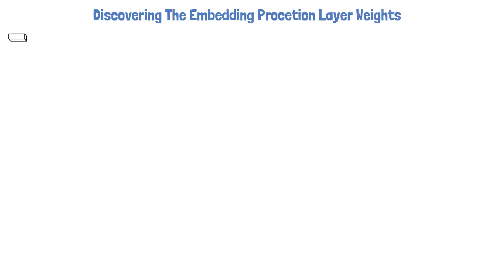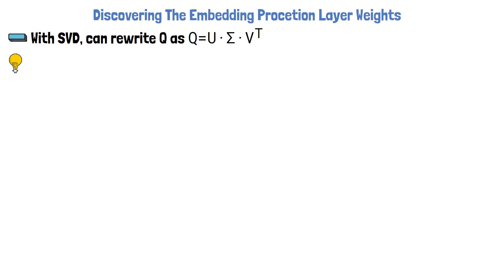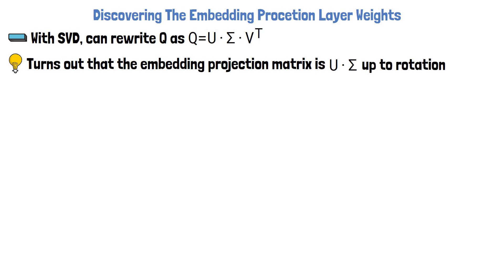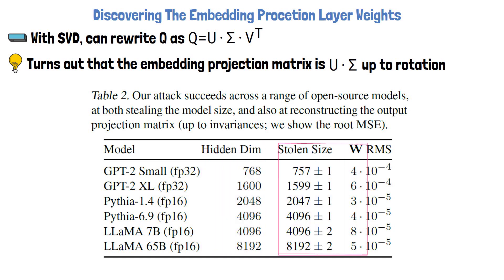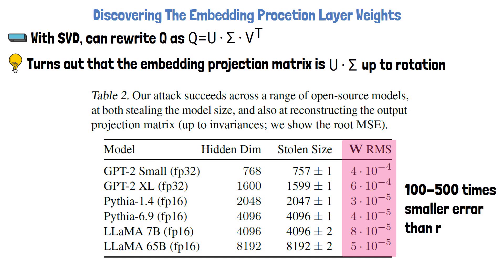Let's now move on to see how we can not only discover the hidden dimension size but also the actual weights of the embedding projection layer. The answer here as well is based on SVD. With SVD we can rewrite the matrix Q — built from the logits returned from the model — as a multiplication of 3 matrices. The researchers found that U-sigma is actually the embedding projection matrix up to a rotation. In the following table from the paper, we can see how close the approximations are: for the hidden dimension size, the attack extracts the correct value for the evaluated models almost precisely, and in the right column we can see the error of the extracted weights after a search for the best rotation of the extracted matrix. For reference, this error is 100 to 500 times smaller than for a random guess.